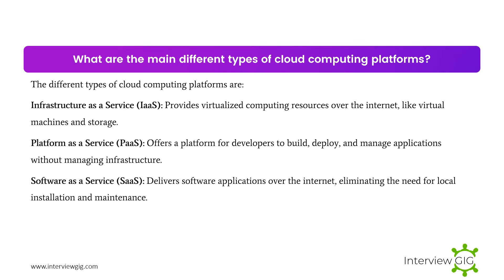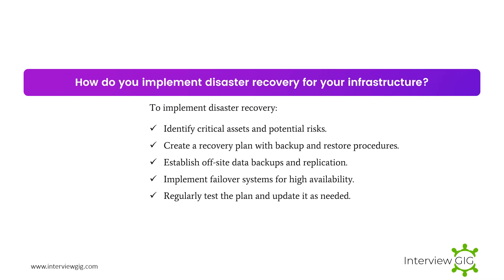What are the main different types of cloud computing platforms? Infrastructure as a Service (IaaS) provides virtualized computing resources over the internet, like virtual machines and storage. Platform as a Service (PaaS) offers a platform for developers to build, deploy, and manage applications without managing infrastructure. Software as a Service (SaaS) delivers software applications over the internet, eliminating the need for local installation and maintenance.